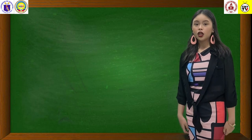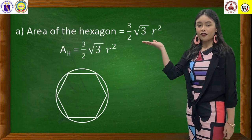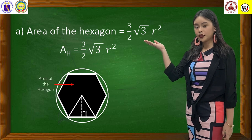Given the radius of the circle, we have the following. A. Area of the hexagon is equal to... And B.